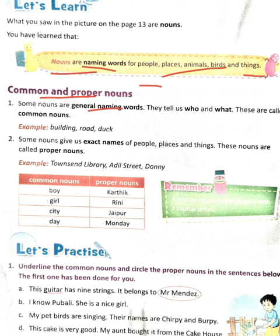Common nouns tell us who or what something is in a general way. For example, 'building' is a common noun — any building could be meant. Similarly, 'actor' is a common noun — it could be any actor from that group. A common noun is a general name from which we cannot tell exactly who or what is being referred to.